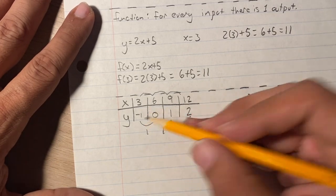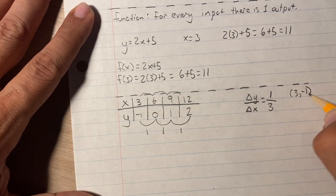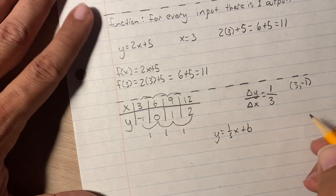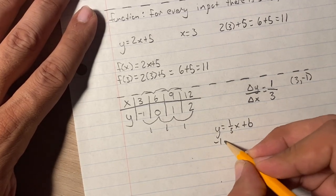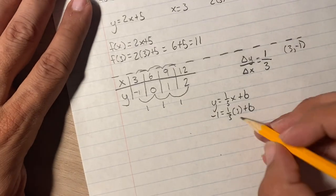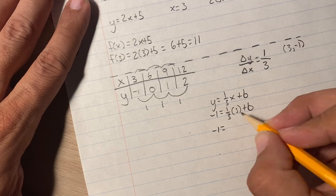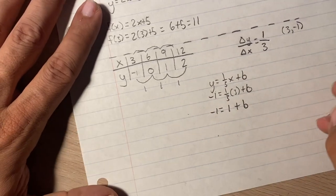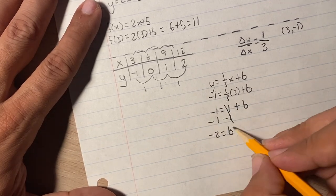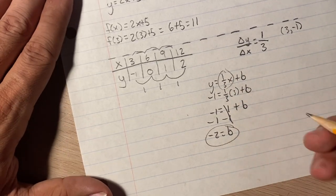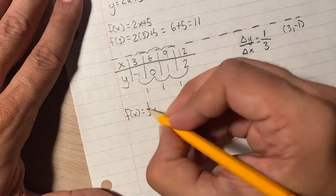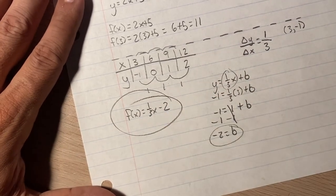Now I just need a point. I can pick any of these. I'll choose the 3, negative 1. But you could choose any of them. Now we know that y equals 1 third x plus b. Now we're going to plug this in. So it's going to be negative 1 equals 1 over 3, 3 plus b. So it's going to be negative 1 equals 1 plus b. Then I'm going to subtract 1, subtract 1. I'm left with negative 2 equals b. And now that I know what b is, and I know what the slope is, I can write this. Remember, I'm writing it in function form. So we're going to write f of x equals 1 third x minus 2. And I'm done. Good luck.